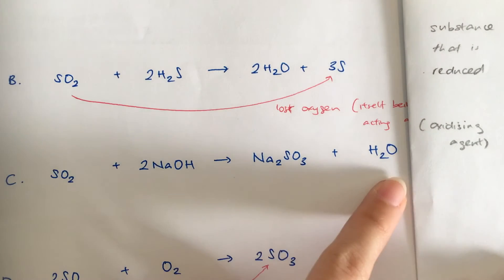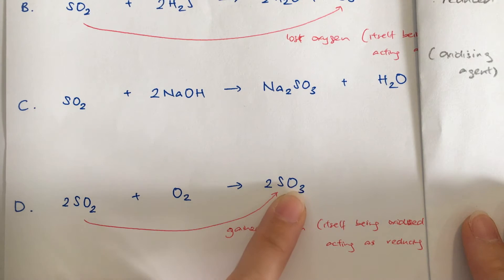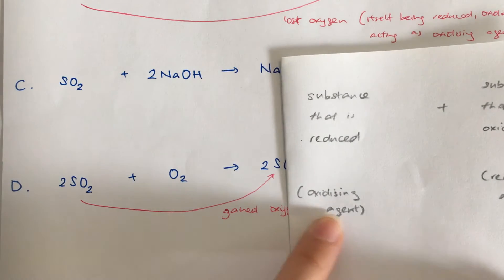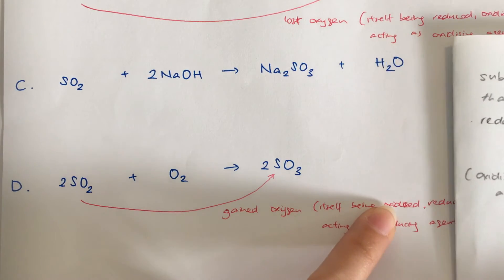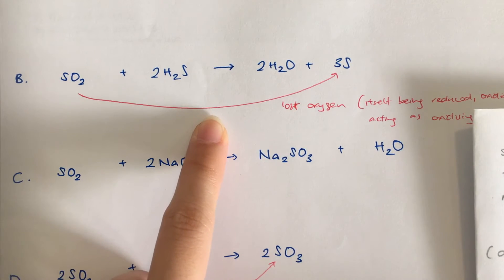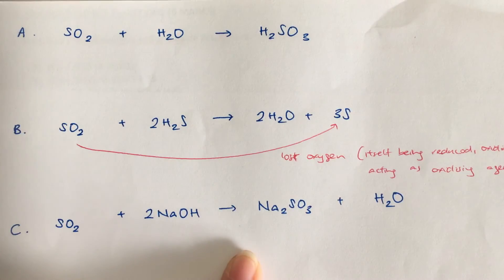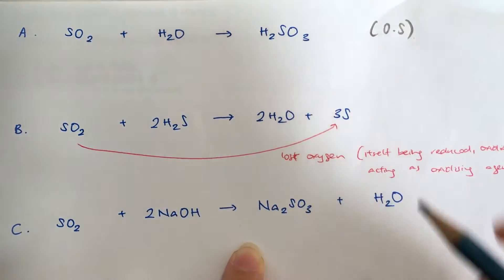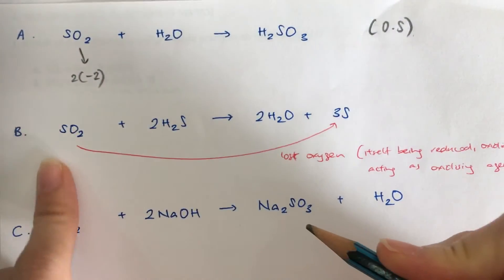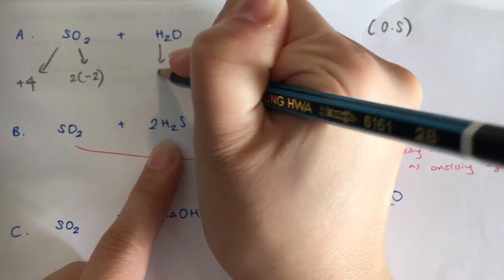Option C is also not straightforward. Option D is straightforward — sulfur dioxide has gained oxygen, meaning sulfur dioxide has been oxidized. So in option D it is not acting as an oxidizing agent because it is being oxidized — it is acting as the opposite. So the answer is B. For options A and C, which are not straightforward, we use oxidation states. For oxygen it is minus two and there are two, so sulfur has an oxidation state of plus four.